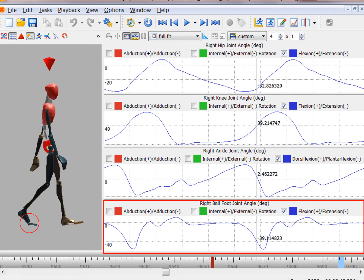The fifth determinant is the foot mechanism in the terminal stance phase. We can focus on the ball-foot joint angle in the red box. The increasing value is flexion, the decreasing value is extension. Now we can see the toe is extended.